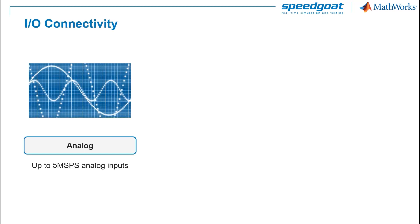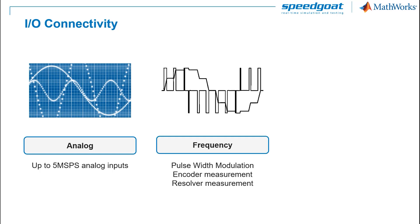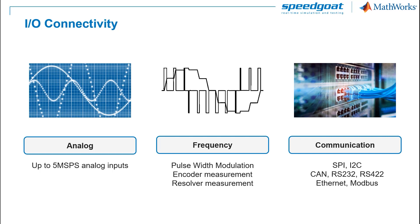In those real-time computers, we can install analog IO modules — for example, analog inputs to measure phase current at high switching frequencies. IO modules with frequency input and output signals such as PWM generation, encoder and resolver measurement, and communication interfaces such as SPI, I2C, CAN, Ethernet, and Modbus.